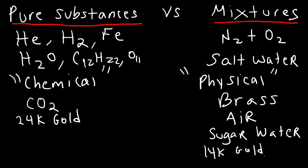What about rubbing alcohol — is it a pure substance or a mixture? Rubbing alcohol is composed of isopropyl alcohol with water added to it. A bottle of rubbing alcohol might say it's 70% alcohol, meaning the other 30% is water, so it's not pure alcohol — it's a mixture.